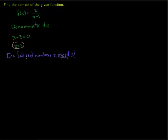Another, more common way to write this in set notation would be: the domain is all real numbers x such that x is not equal to 3. The vertical line here denotes the words 'such that.'